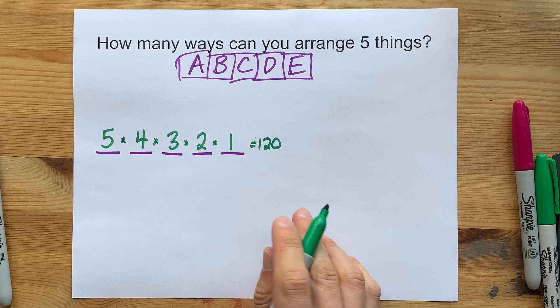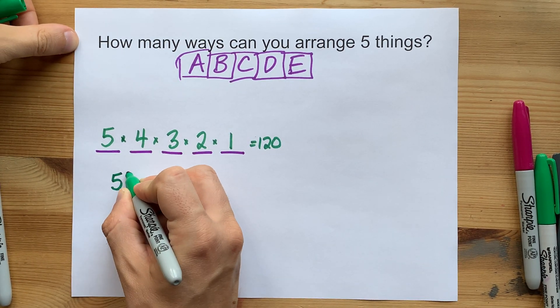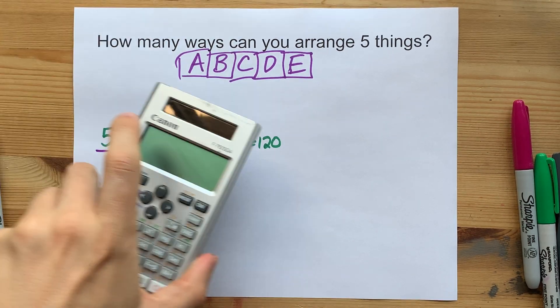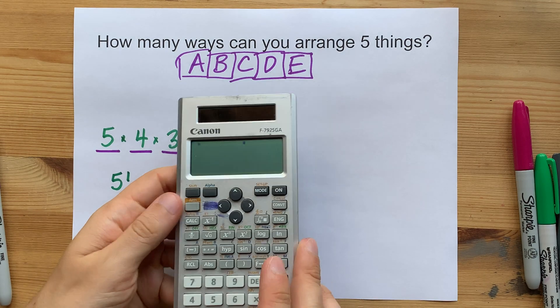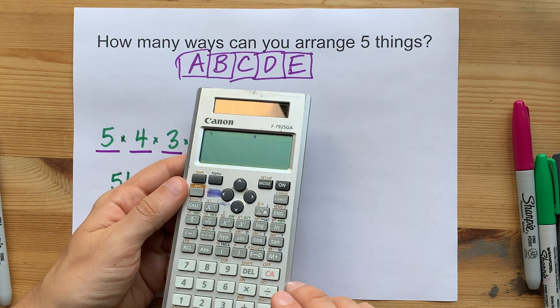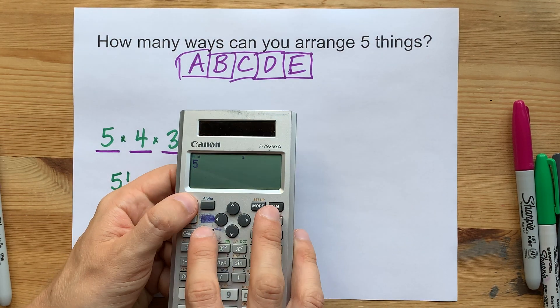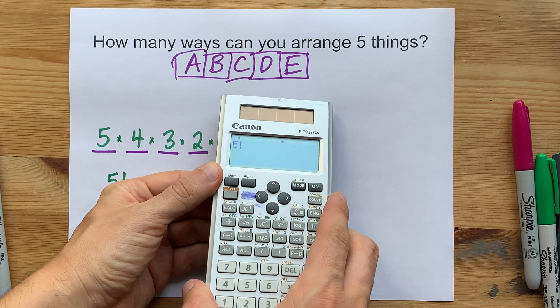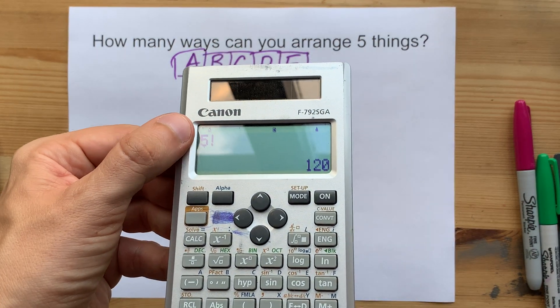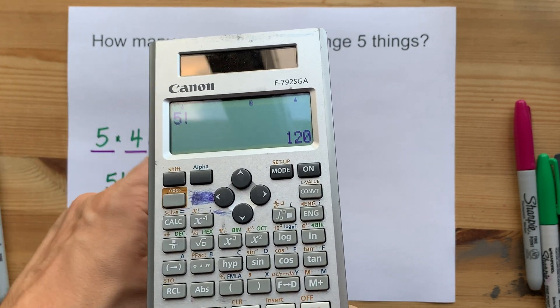And if you're being asked this question, your teacher probably covered something called factorials. It's called five bang. At least that's what computer scientists call it. I have a button for that somewhere. Oh, I used to. What happened to this guy? Oh, there it is. It's way up there. Five exclamation mark. Can you see that? Does the same thing for me.